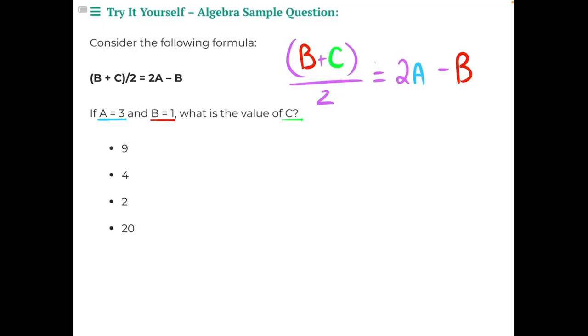To find the value of C, we need to perform a series of substitutions where we substitute 3 in for all of the A's in our equation and substitute 1 in for all of the B's. Then we can use order of operations and opposite operations to isolate our variable and find the value of C.